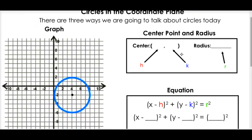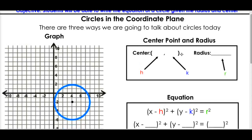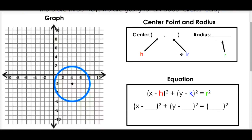Circles in the coordinate plane. There are three ways we're going to talk about circles today. So far we've just been doing circles on paper, but now we're going to be doing circles on coordinate planes - we're graphing them. Three ways: one is a graph, two is center and radius, and three is the equation.